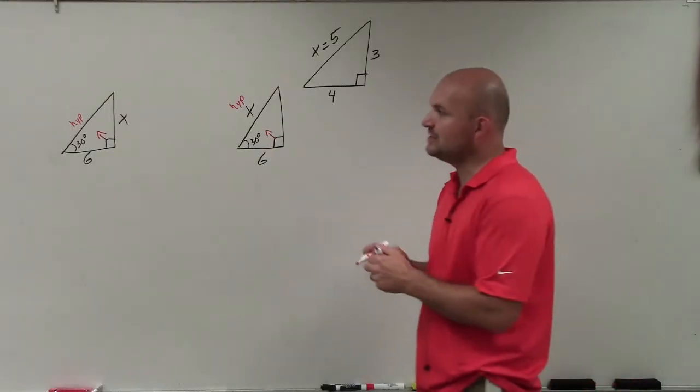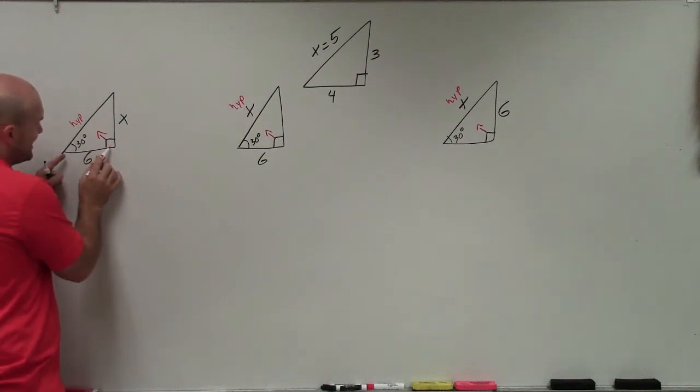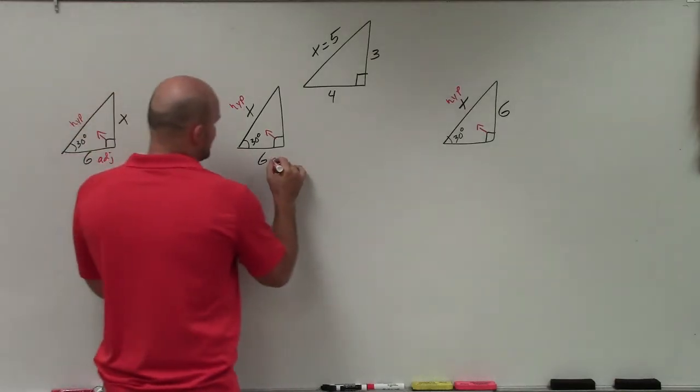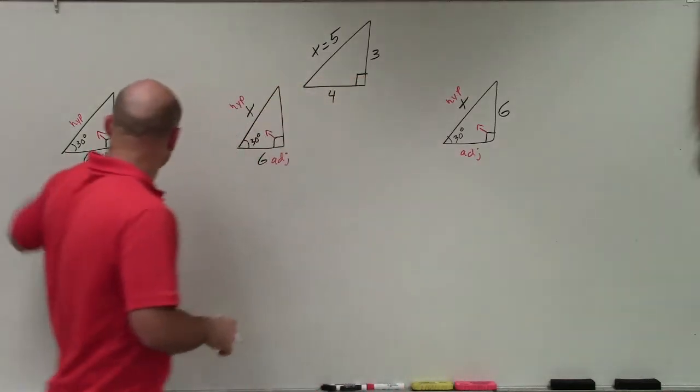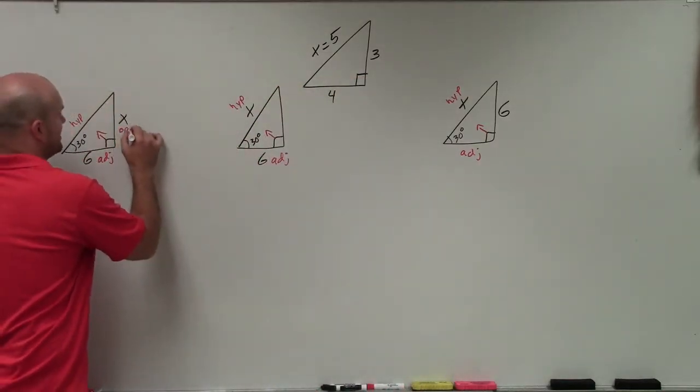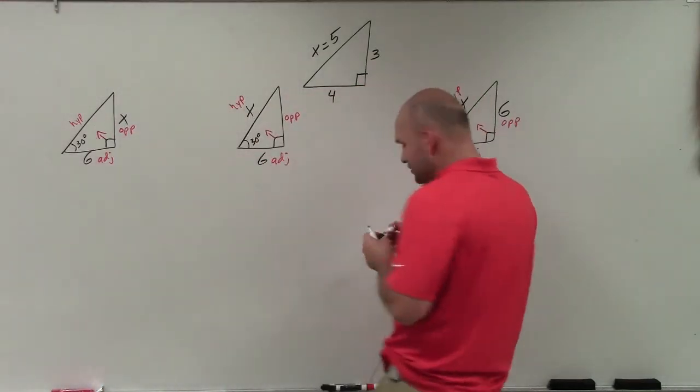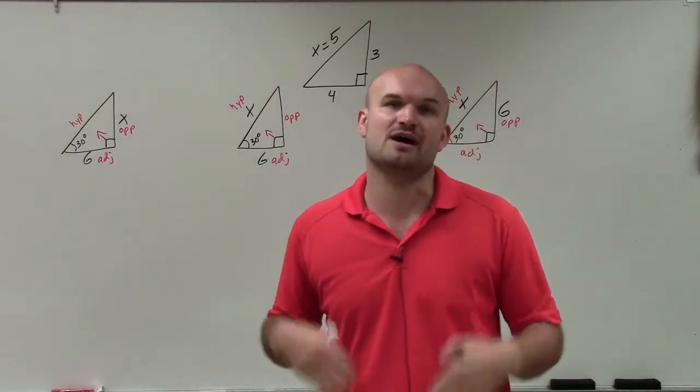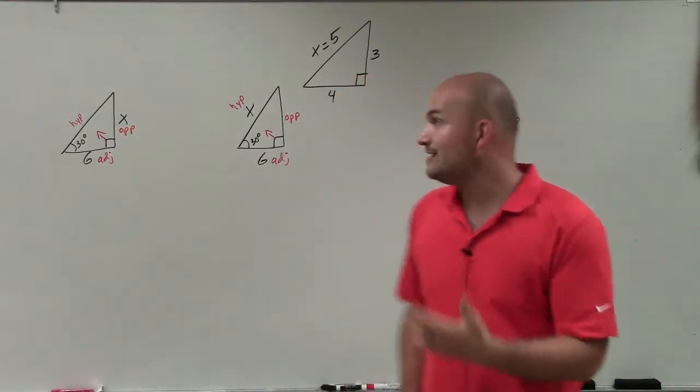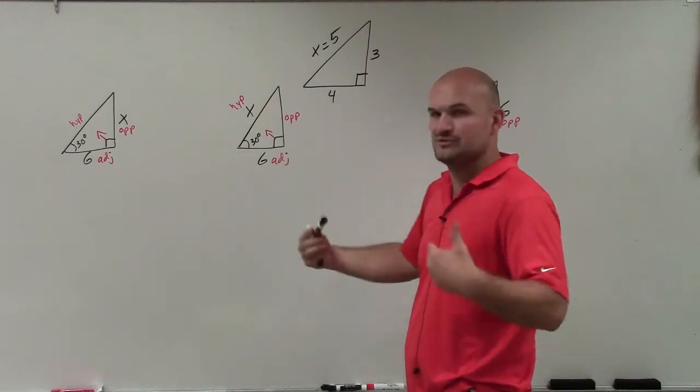Once we know where the hypotenuse is, always directly across from our 90 degree angle, the side that is between our angle and our 90 degree angle is our adjacent. The side length that is opposite of our angle is called our opposite side. The reason why I'm spending the time labeling all of this information is because to use our trigonometric functions, we need to know what is our opposite, adjacent, and hypotenuse to identify which trigonometric function we can use. If we're given the opposite and the adjacent, I have to use tangent. I can't use sine or cosine.